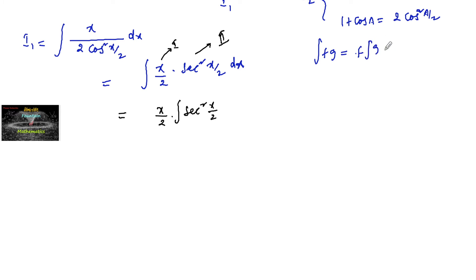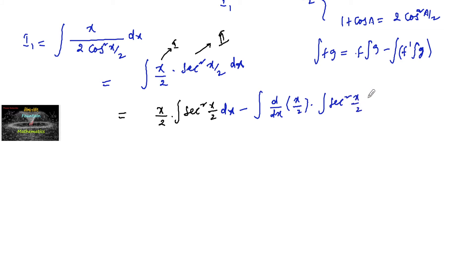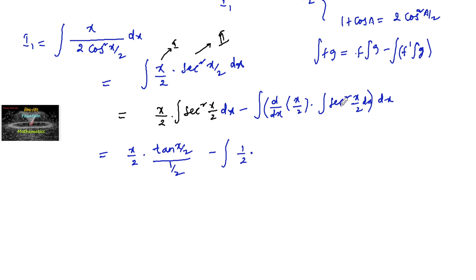Using the integration by parts formula — integral of f·g = f · integral(g) − integral(f' · integral(g)) — we get: (x/2) · integral of sec²(x/2) dx minus integral of [d/dx(x/2) · integral of sec²(x/2)] dx. The integral of sec²(x/2) is tan(x/2) divided by the coefficient (1/2), and the derivative of x/2 is 1/2.